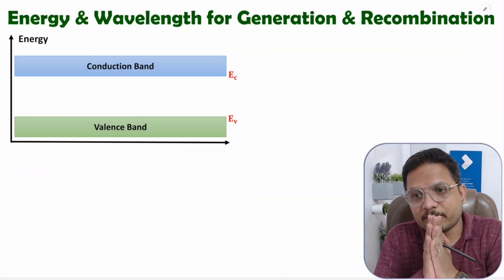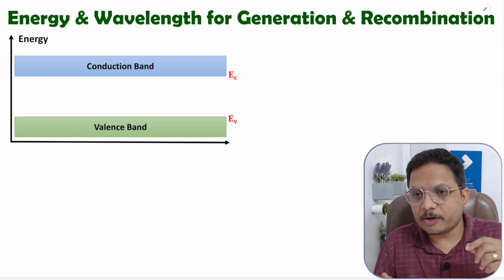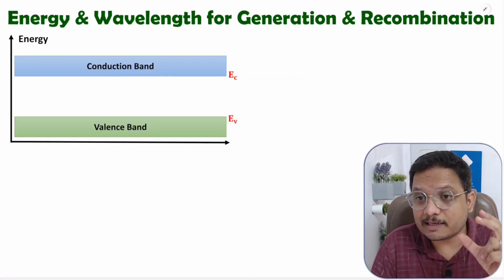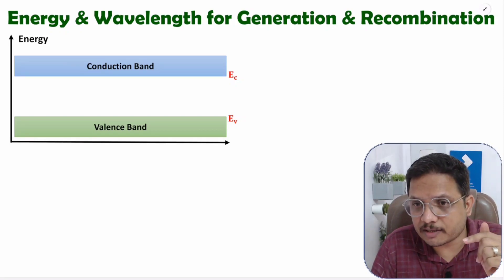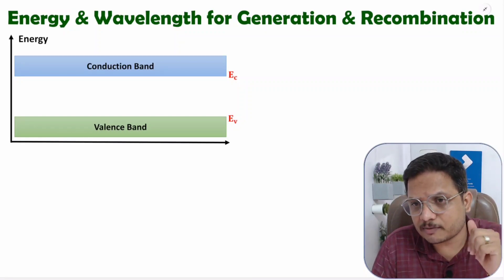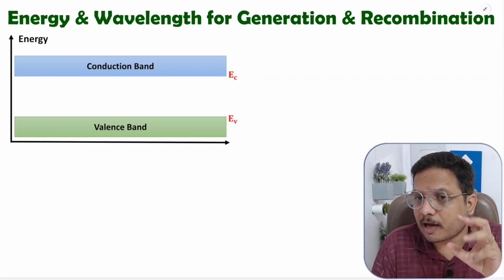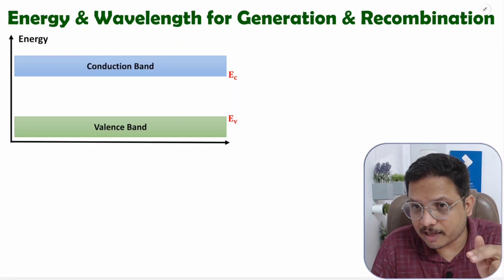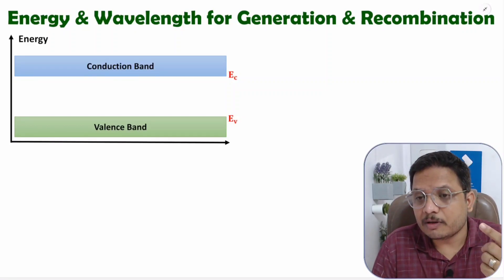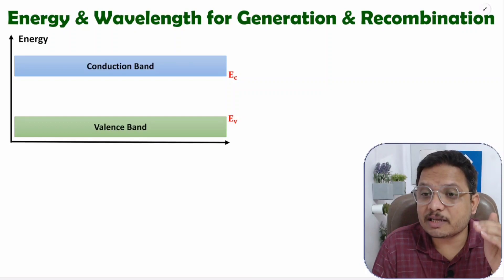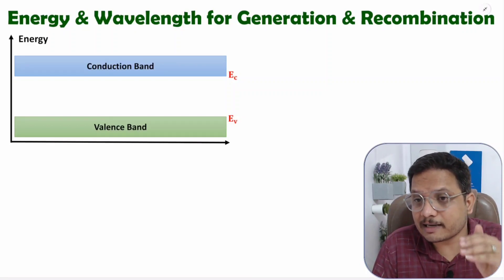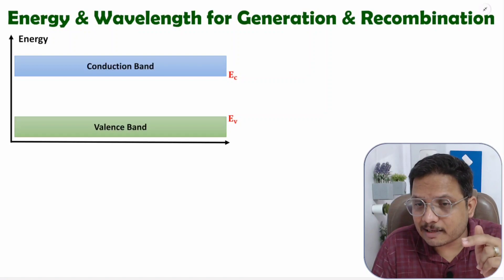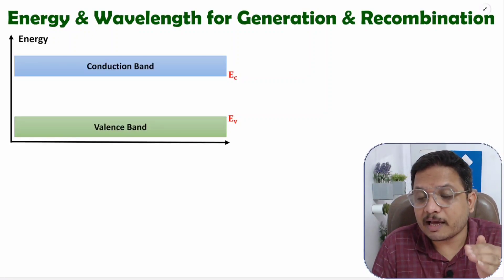Hello friends, welcome to Engineering Funda family. In this video, I am going to explain you the basic relation between energy and wavelength for generation and recombination. First I will explain how exactly generation and recombination happens inside semiconductor material. After that, I will explain how many ways there are for generation and recombination. And at last, I will explain the basic relationship between energy and wavelength for generation and recombination.